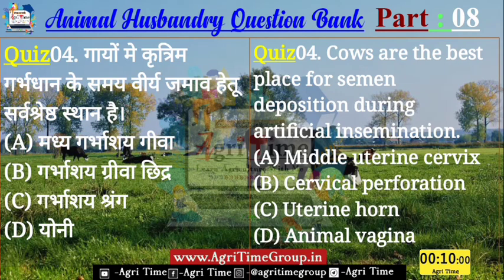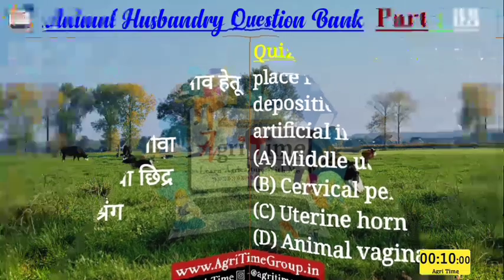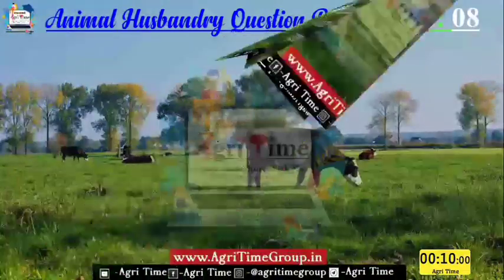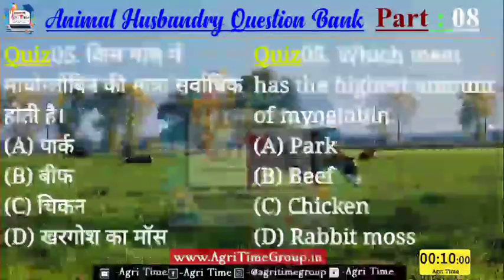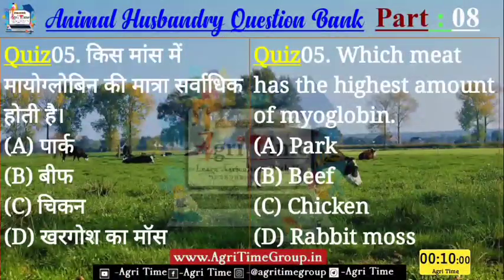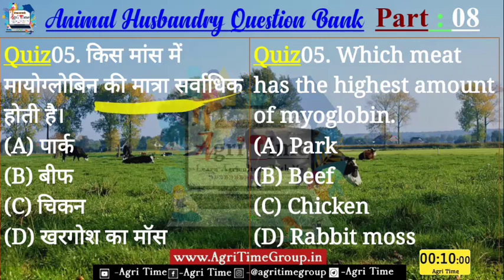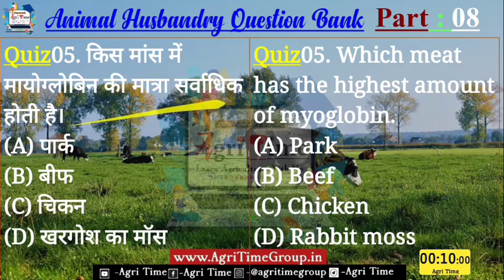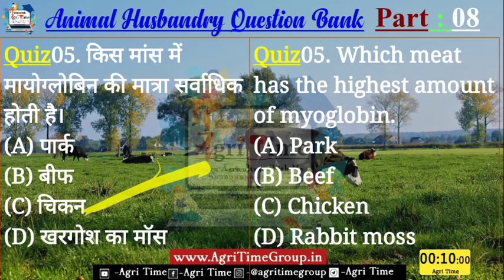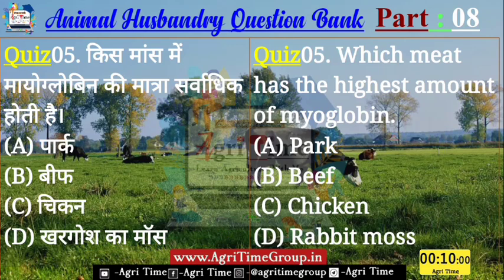Question number 5 — यह रहा आपके screen पर। किस मांस में Myoglobin की मात्रा सर्वाधिक होती है? Options: Pork, Beef, Chicken, या फिर खरगोश के मांस में? तो बतलाईए quiz 5 के लिए right answer क्या होगा?